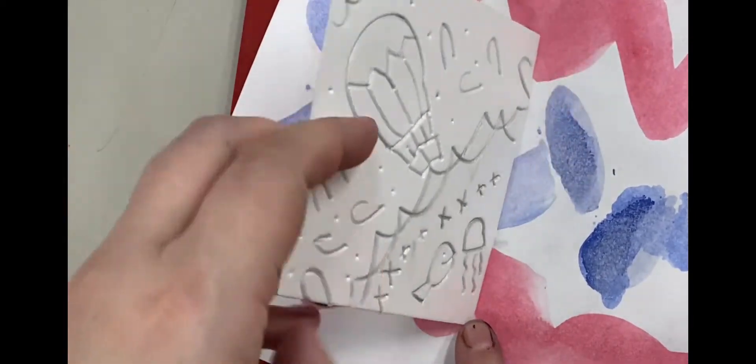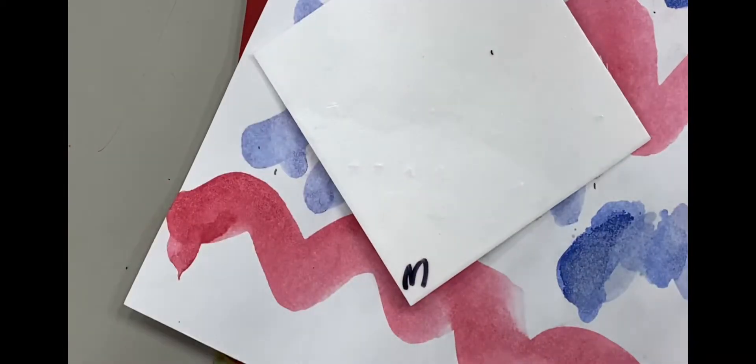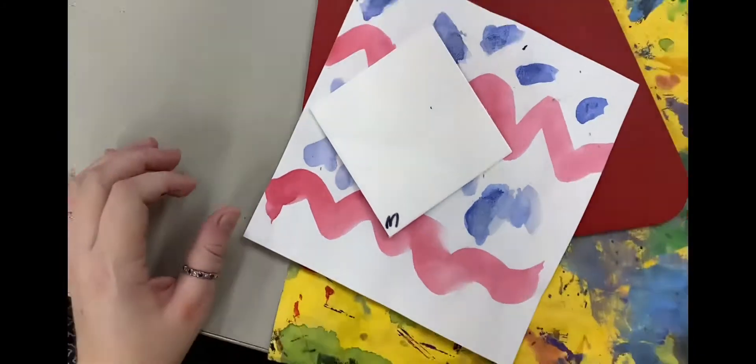you're going to put your finger on the bottom and flip it over. In that corner, write the letter M. That's going to be the middle of your print.